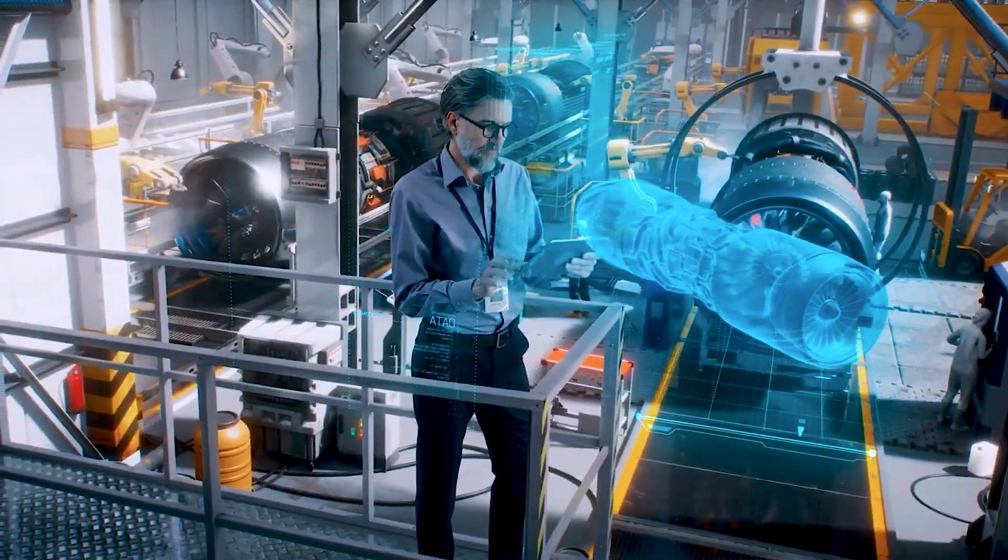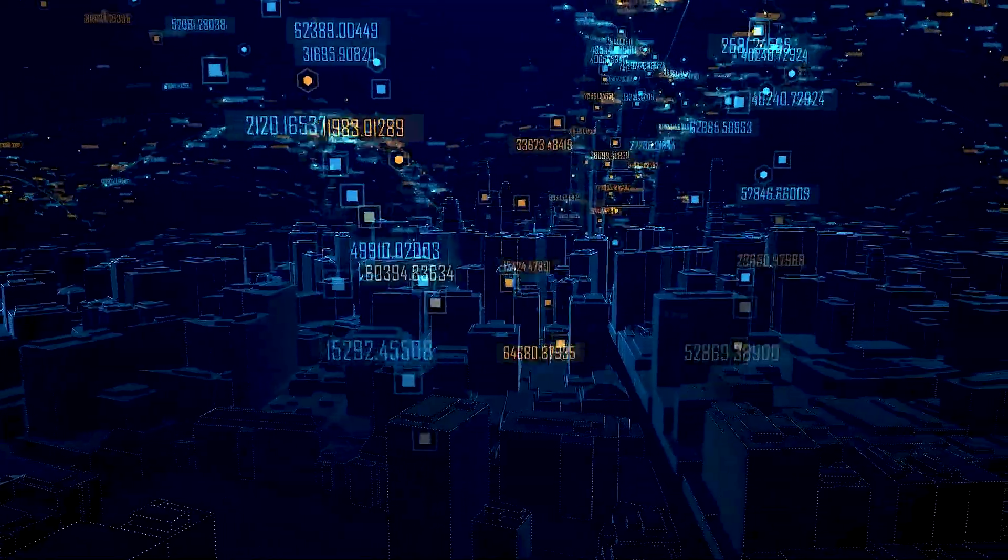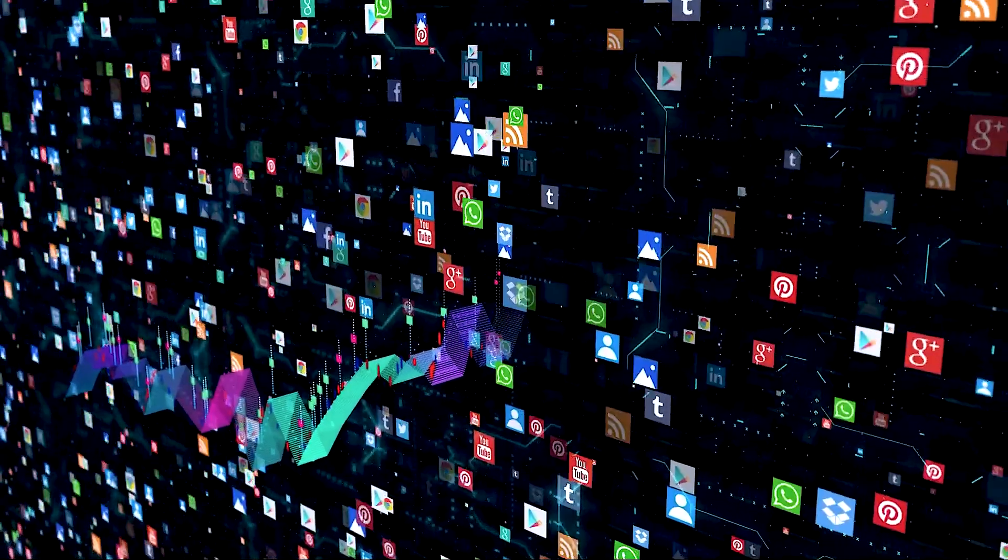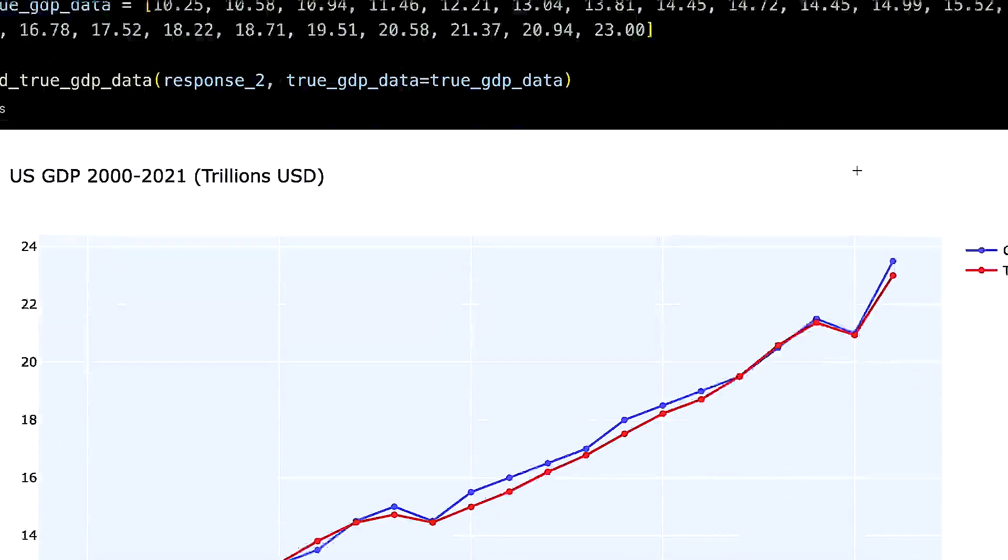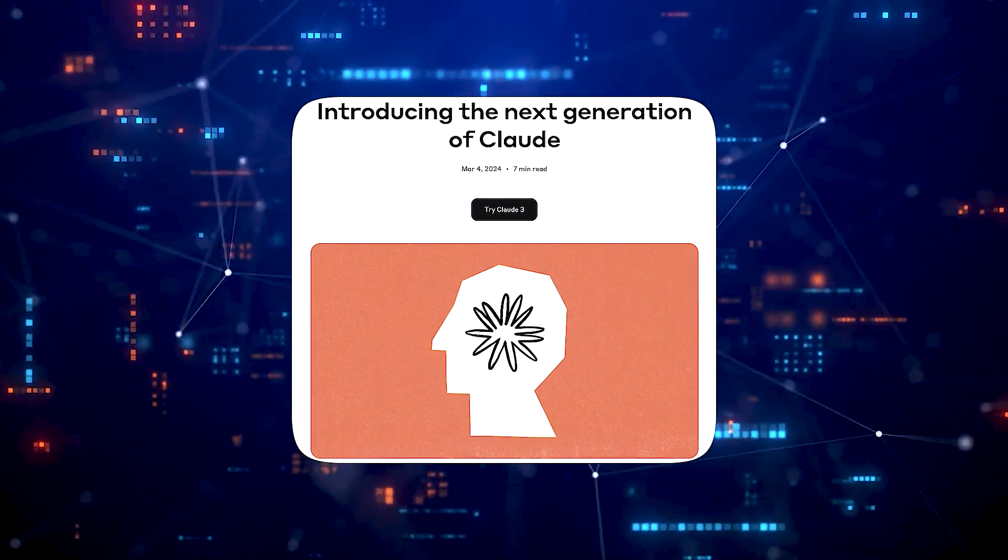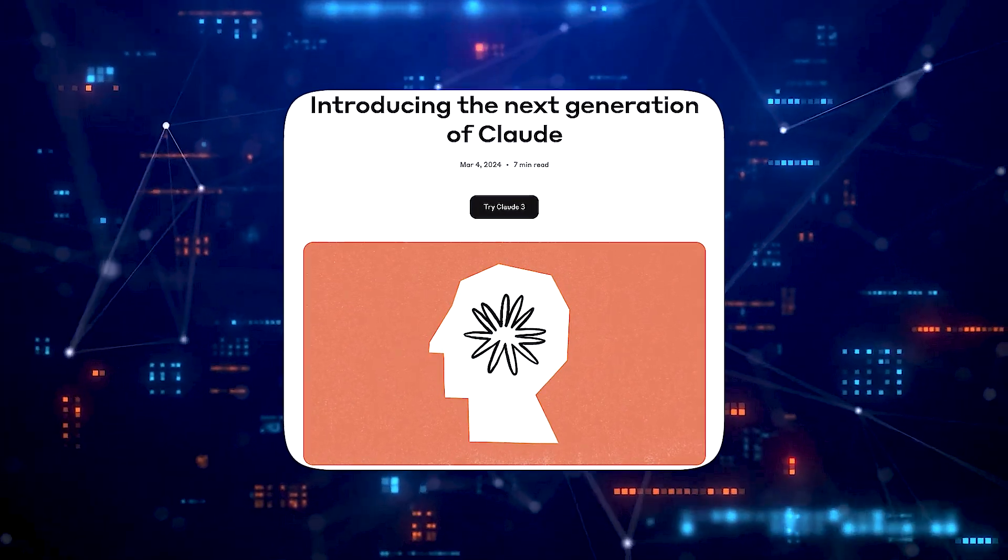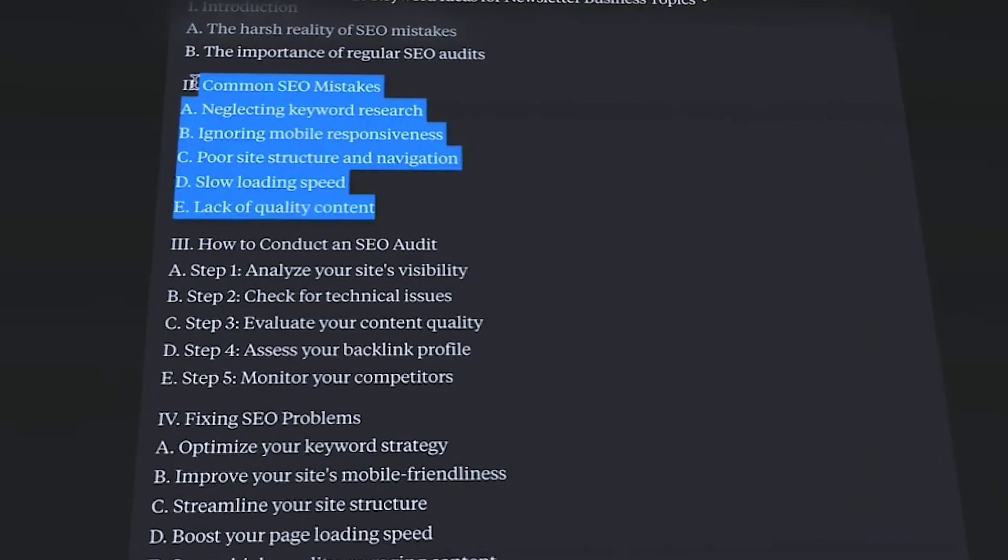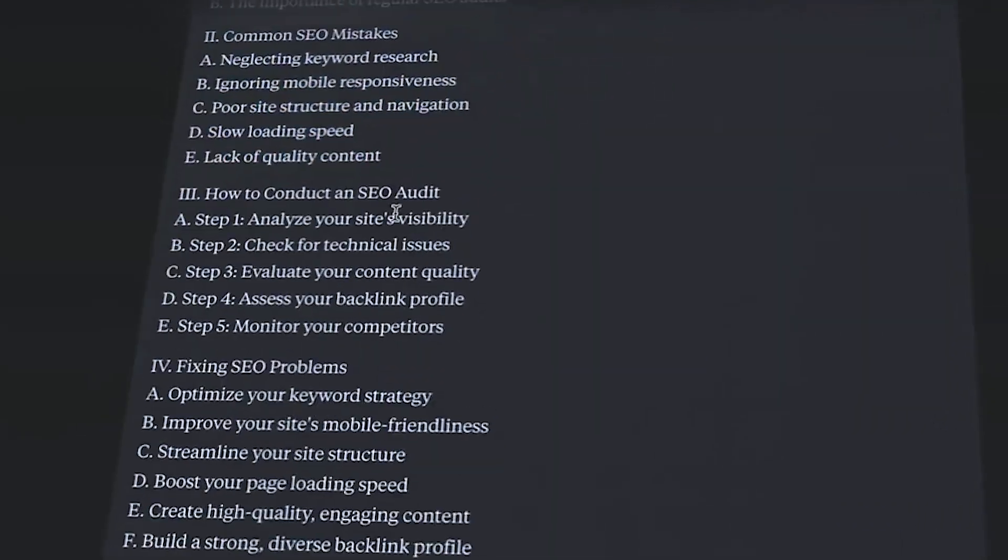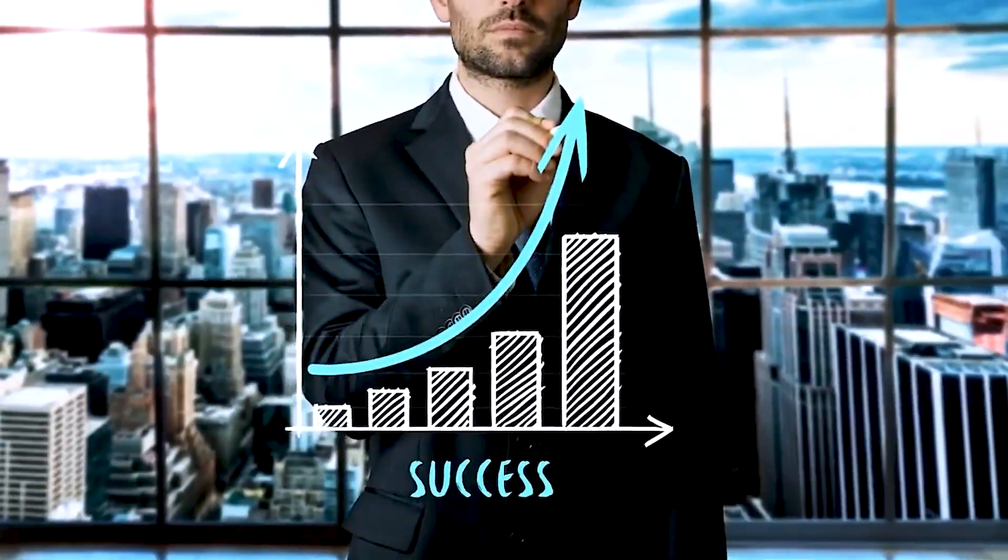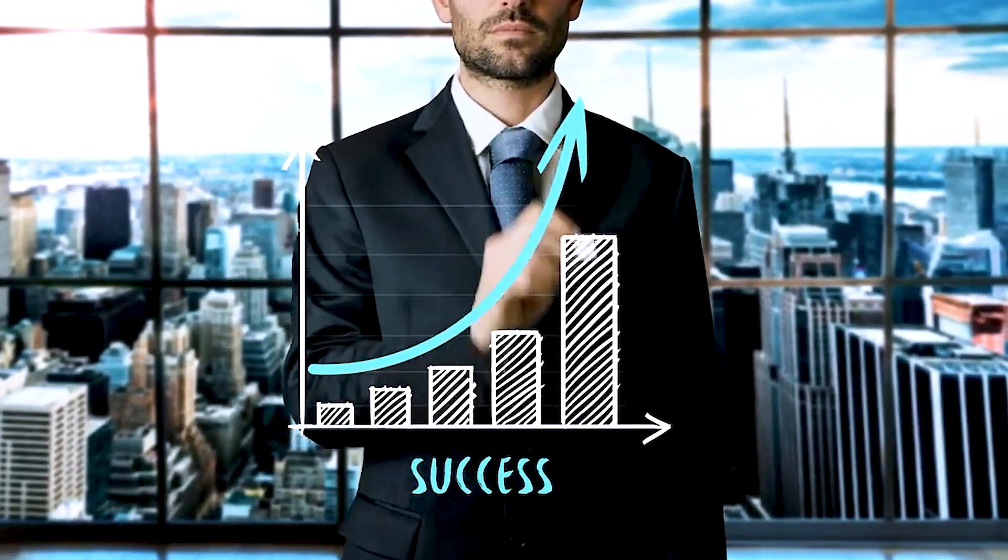In today's digital age, where information flows rapidly and misinformation can spread like wildfire, the need for reliable and verifiable data has never been more crucial. By offering the option to cite sources, Anthropic empowers users to validate the information provided by the models, ensuring that decisions and actions are based on credible and authoritative sources. This feature is particularly valuable in fields where accuracy and credibility are of paramount importance, such as healthcare, finance and legal domains.